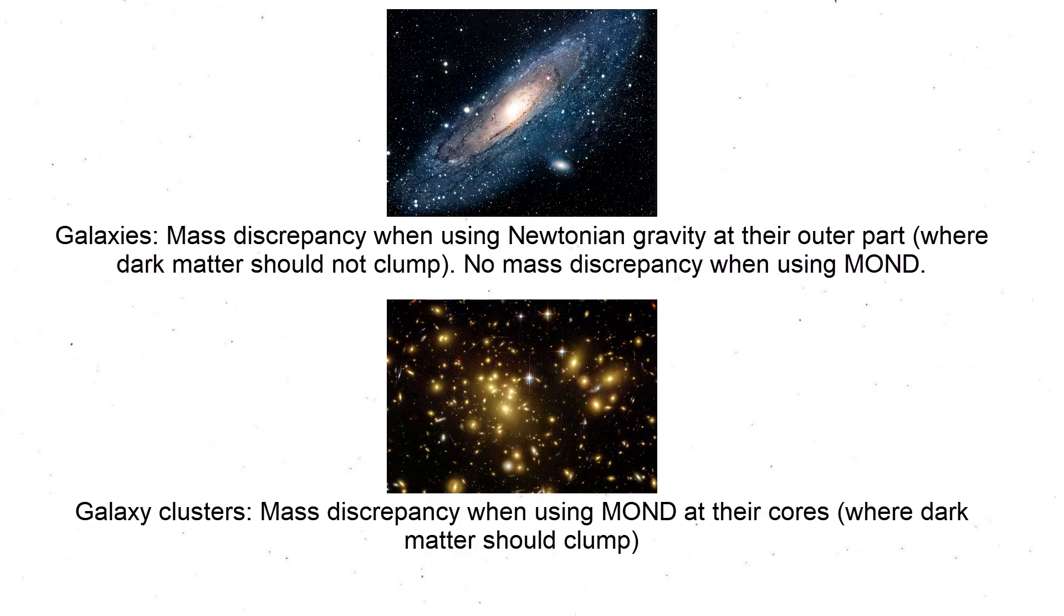The cuspy halo problem shows that by using Newtonian gravity, the mass discrepancy increases with distances far away from the galactic center, because physical dark matter should concentrate more in both galaxy centers and cluster centers. Dark matter should clump by gravity with higher densities where there is more baryonic matter, and this works in galaxy clusters considering that MOND holds, but not within galaxies.